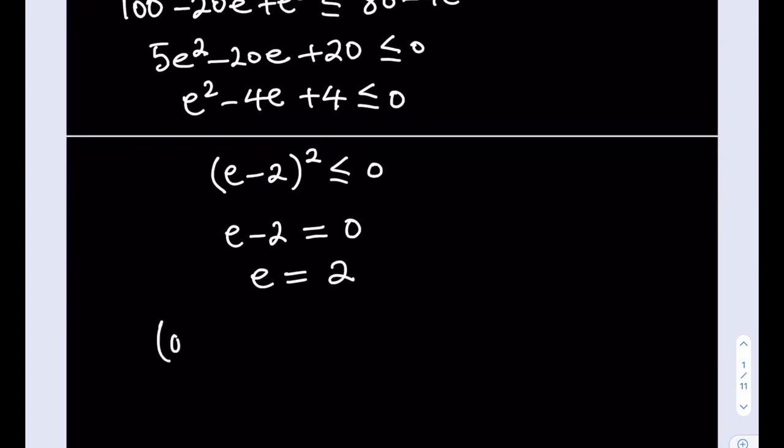So basically our solution as an ordered quintuple is going to be 2, 2, 2, 2, 2. In other words, all these variables are going to equal 2 and that's going to be the only real solution to this system of equations.